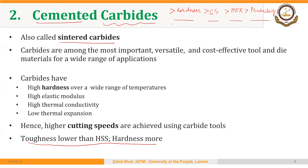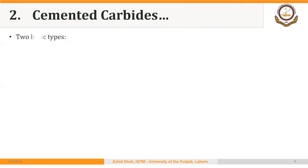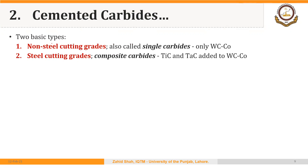This relationship is very important and we will return to it once we conclude the discussion on cutting tool materials. There are two basic types of carbides for use as cutting tool materials: non-steel cutting grades and steel cutting grades. Non-steel cutting grades are also called single carbides because we have only tungsten carbide with a cobalt matrix.